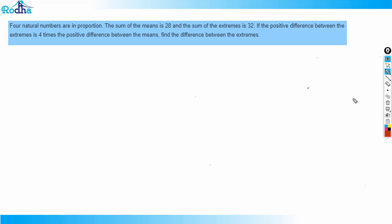Look at this question: four natural numbers are in proportion. The sum of the means is 28 and the sum of the extremes is 32. The positive difference between the extremes is four times the positive difference between the means. Find the difference between the extremes.